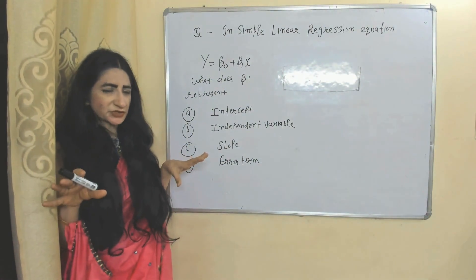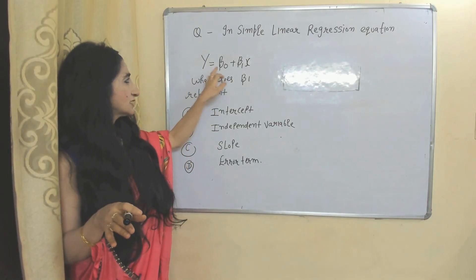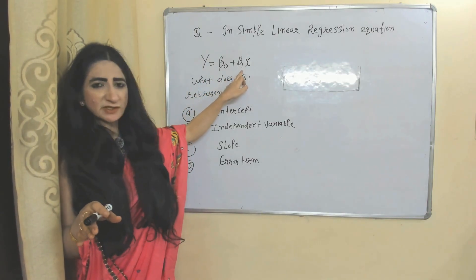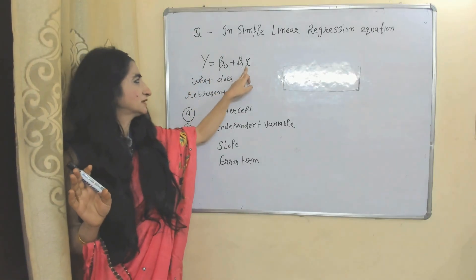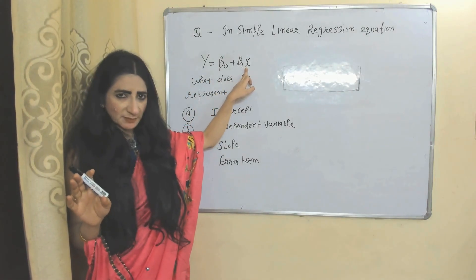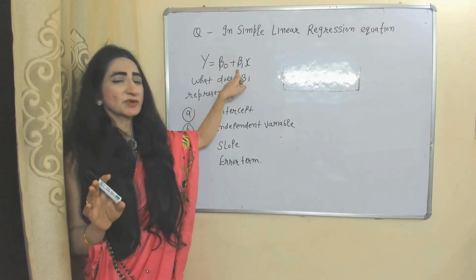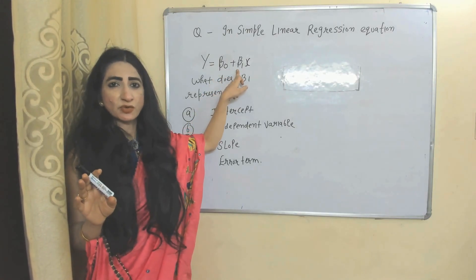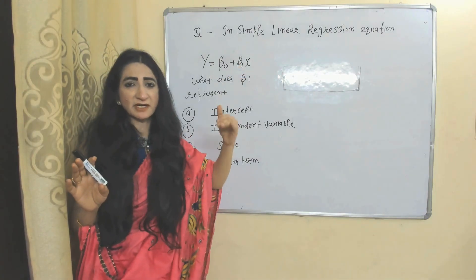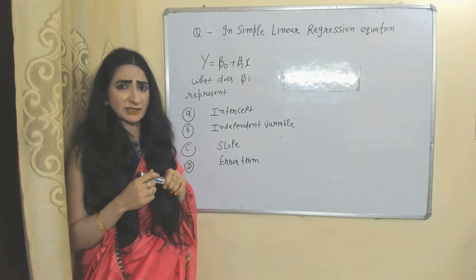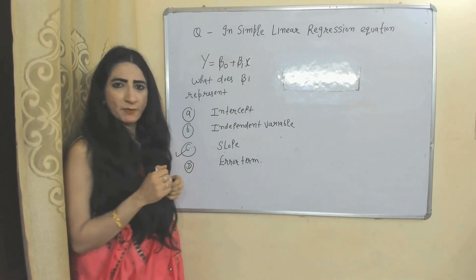MCQ Question 1: In simple linear regression, what does Beta-1 represent? Options: dependent variable, independent variable, intercept, or slope. Beta-1 is the slope of the line, showing the rate of change in the dependent variable with respect to change in the independent variable. The correct answer is C: slope.